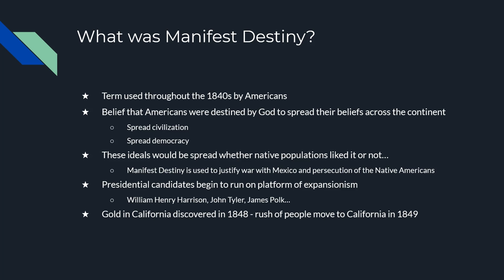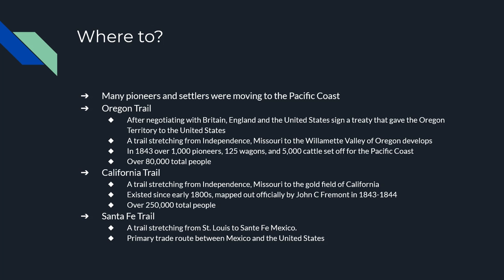Manifest Destiny is going to be used for the persecution of Native Americans and to justify the idea of war with Mexico. Many presidents ran on the idea of Manifest Destiny — William Henry Harrison, John Tyler, James K. Polk, just to name three. Manifest Destiny was also helped along by the discovery of gold in California in 1848 and the subsequent gold rush that started in 1849. Basically, Manifest Destiny means God said go West — that's the easiest way to remember it.